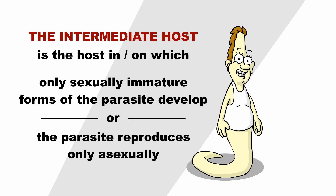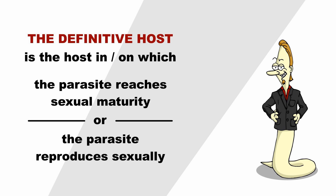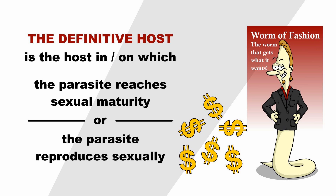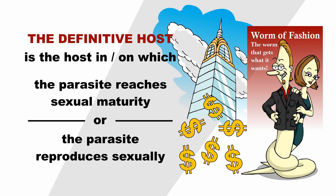To sum up, the intermediate host shelters pimply parasites with pubescent armpits and a breaking voice. They often stink of sweat, and watching porn in secret is the full extent of their sexual experience. The definitive host, however, houses shrewd, stylish, stock-broking parasites who make sweet love to their partners in their Manhattan apartments day by day.